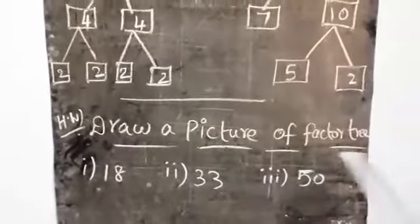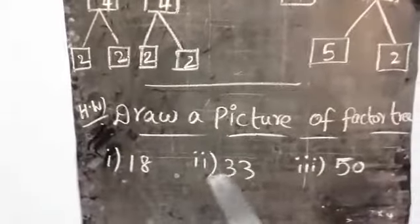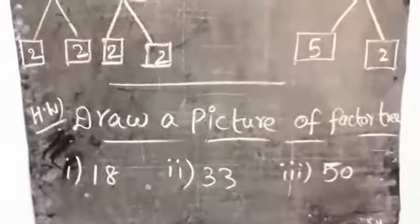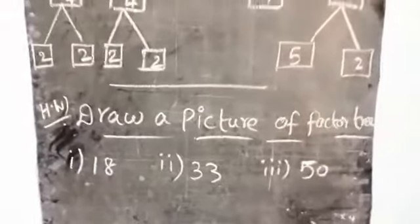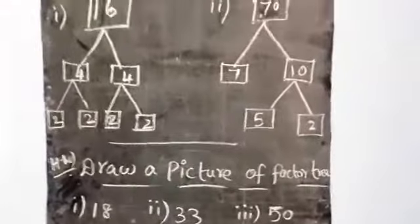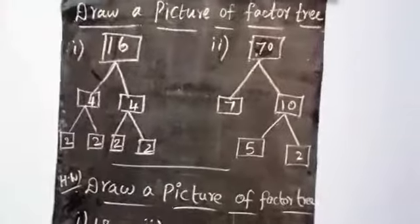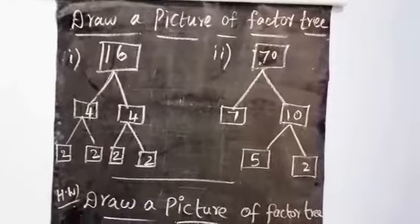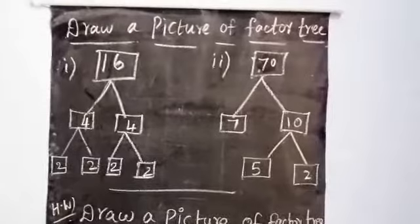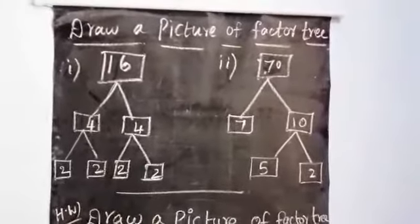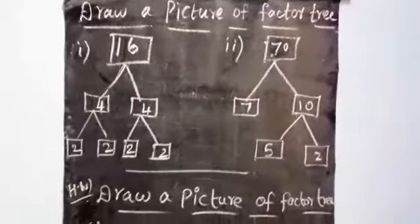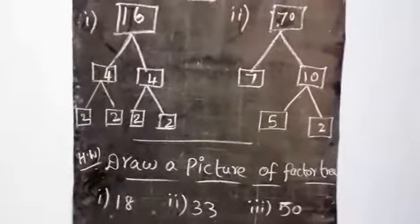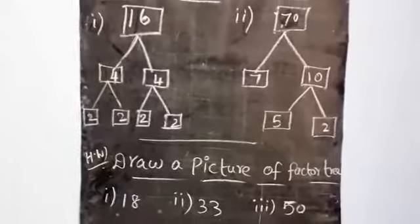This is your homework — draw factor trees for eighty, thirty-three, and fifty. Dear children, write about square numbers, factors, common factors, and factor trees, and do the homework in your maths notebook. Thank you!